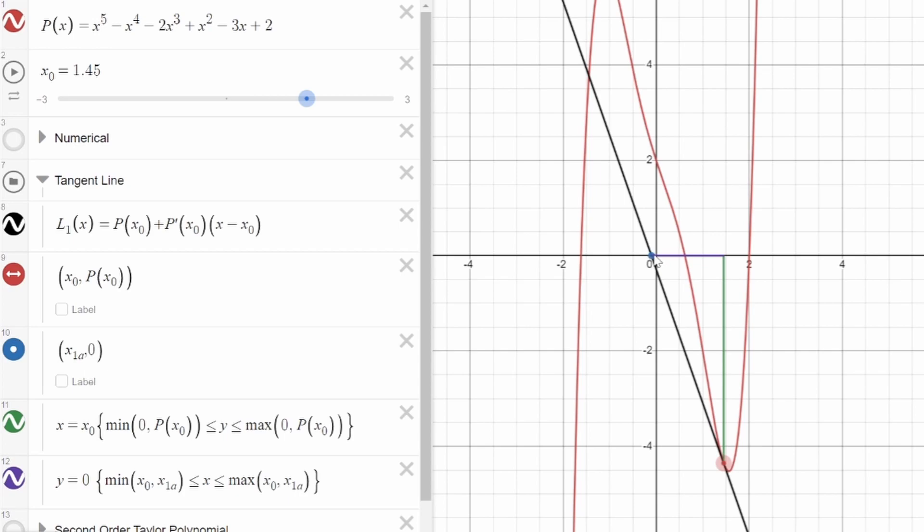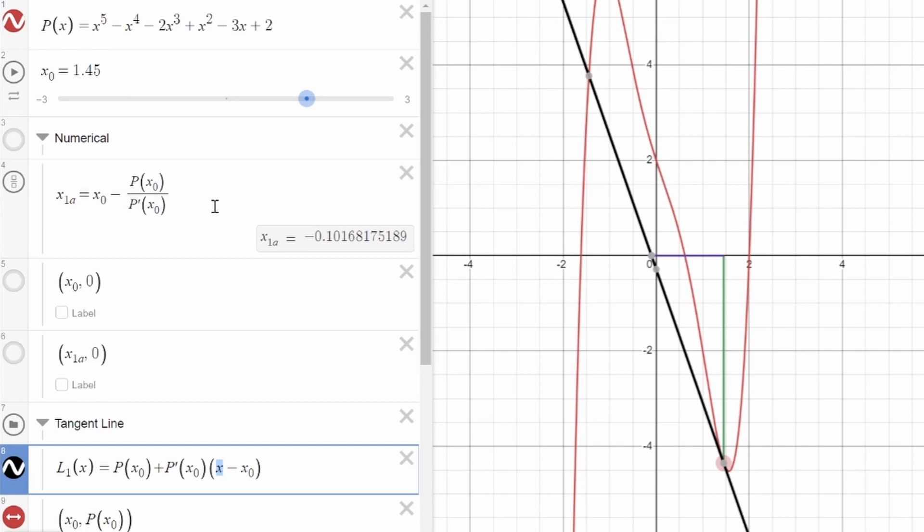To find the coordinates, and therefore x value of this point, all you have to do is set this equation equal to zero and rearrange for x. And you can see that after doing that, you end up with the equation of Newton's method.